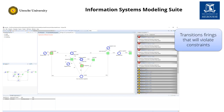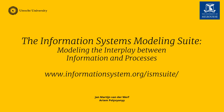Each transition can have a transaction to manipulate the current population. If a transaction violates a constraint, its transition cannot be executed. The tool reports why the transaction is not allowed and which constraints are violated. If you want to know more, visit our presentation and tool demonstration. Good luck modeling!